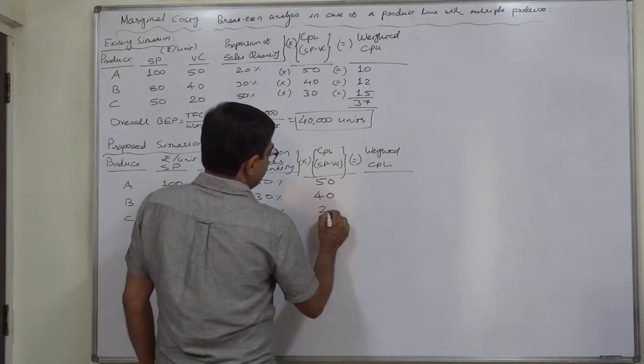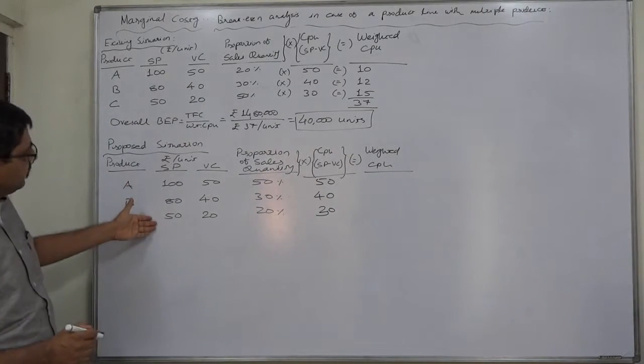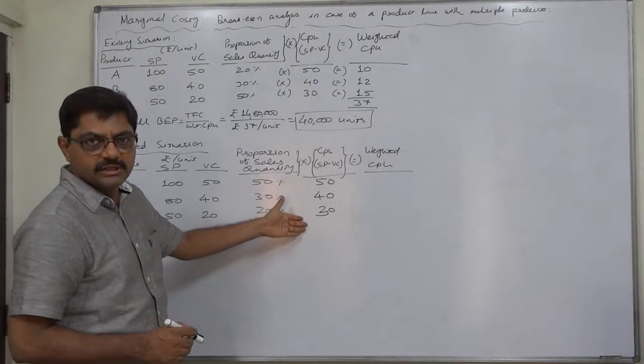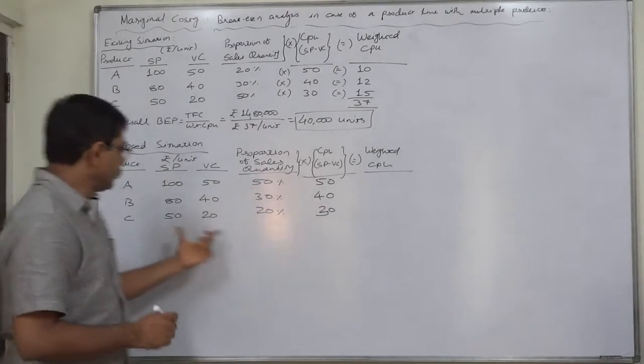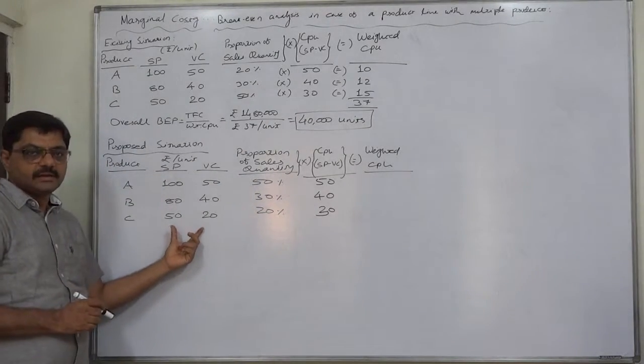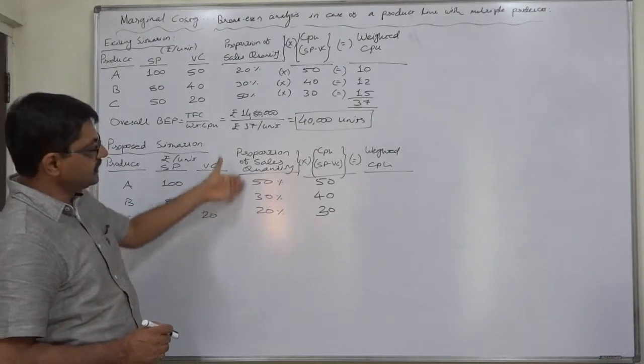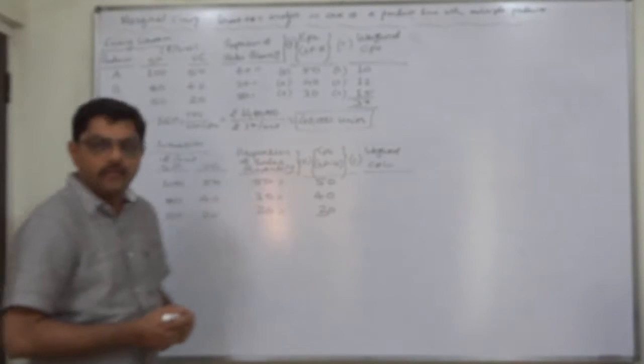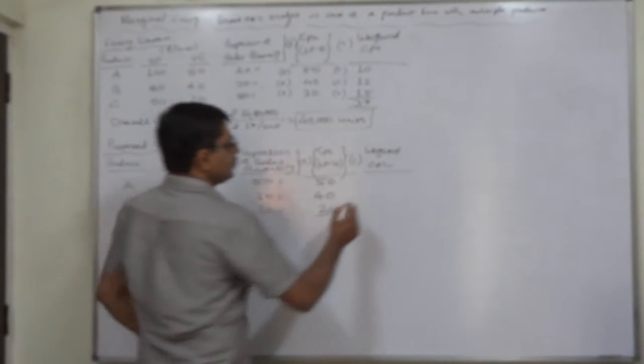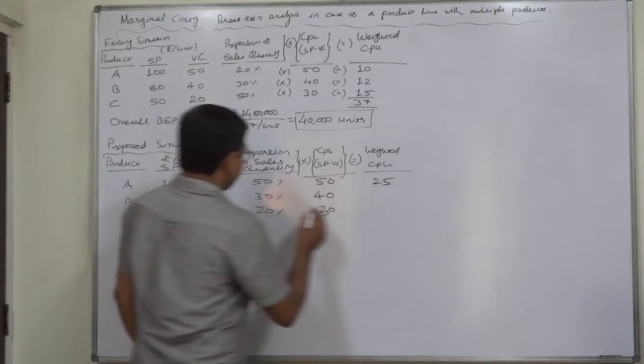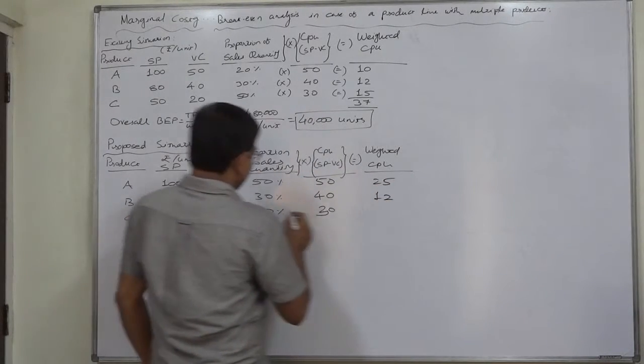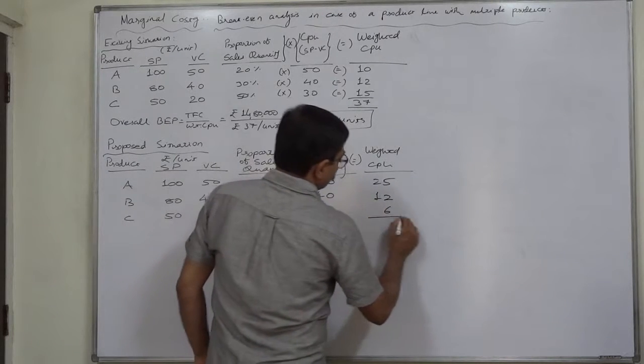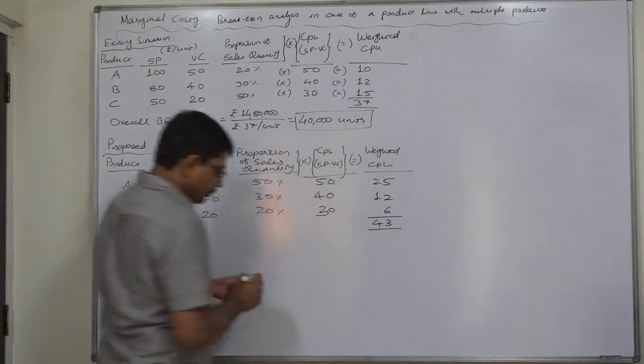For that we need contribution per unit. They remain unchanged because there is no change in selling price per unit and no change in variable cost per unit. But since the sales quantity percentages have changed, there will be change in the weighted contribution: 50% into 50 is 25, 30% into 40 is 12, and 20% into 30 is 6. So now the weighted contribution comes to Rs. 43 per unit.